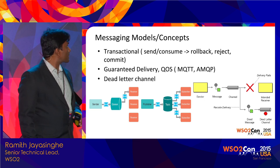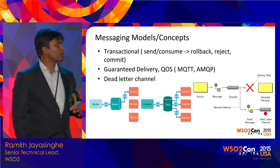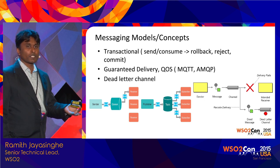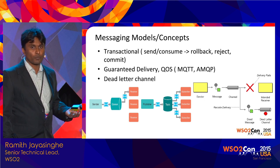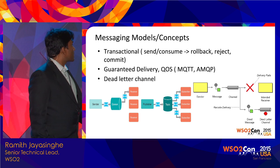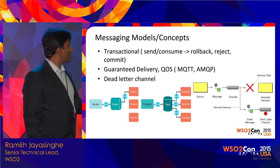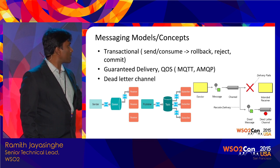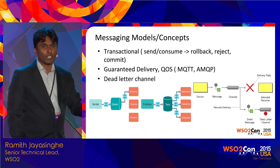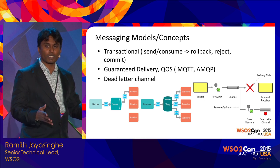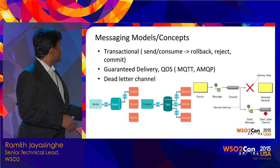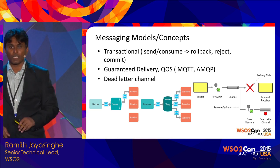There are different semantics — you can send messages in a transactional manner, consume in a transactional manner, get guaranteed delivery, and configure quality of service levels. For example, MQTT and AMQP support this. Then there is the dead-letter channel, where if delivery to a consuming client fails after a number of attempts, the message is placed in a special place called the dead-letter channel.